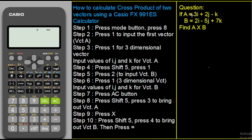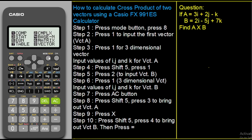Here is our question. We have vector A and vector B. We need to input vector A into our calculator and then input vector B as well. Then the third step is to calculate the cross product. The first step is to put our calculator in vector mode — to do this we press the mode button and then press 8. When you press mode you see the different modes available, and vector mode is at number 8.